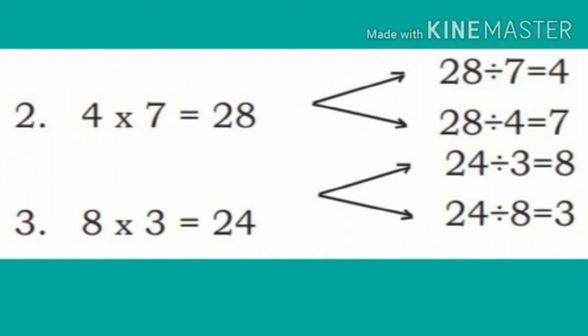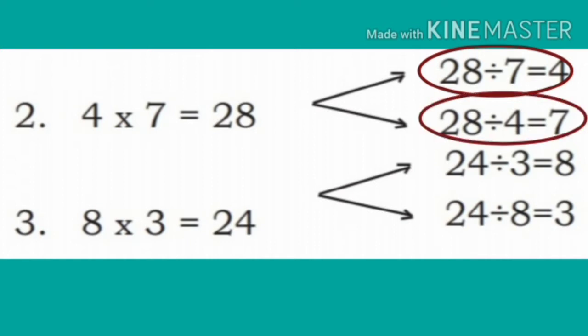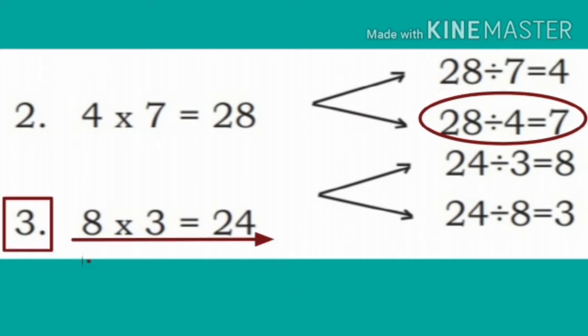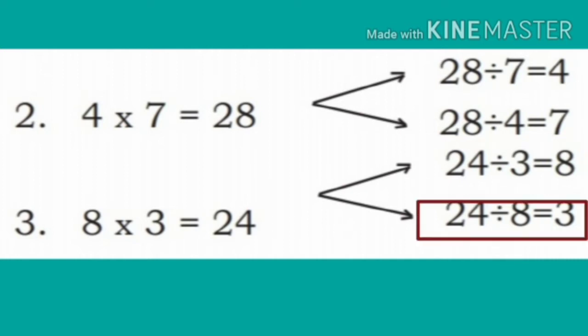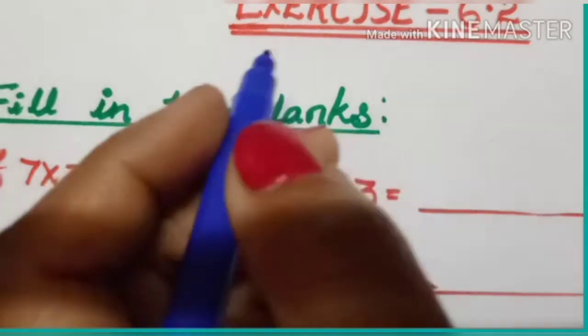Now, third example. 8 into 3 is equal to 24. Here the division form: 24 divided by 3 is equal to 8, and 24 divided by 8 is equal to 3.